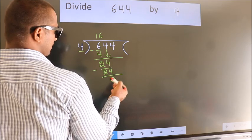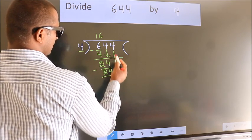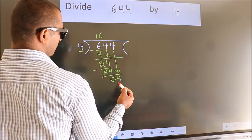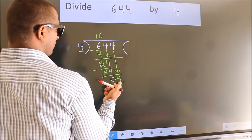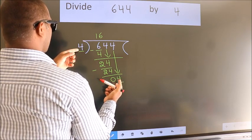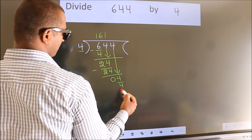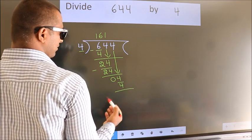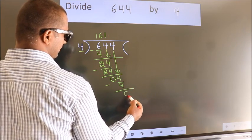After this, bring down the beside number. So 4 comes down, giving us 4. When do we get 4 in the 4 table? 4 once 4. Now we subtract — we get 0.